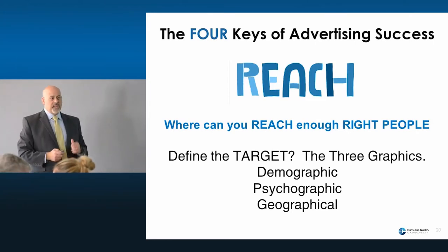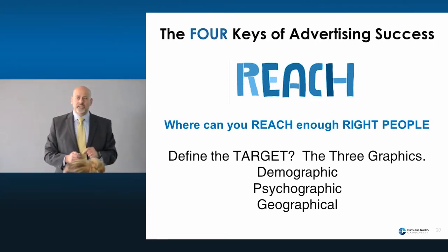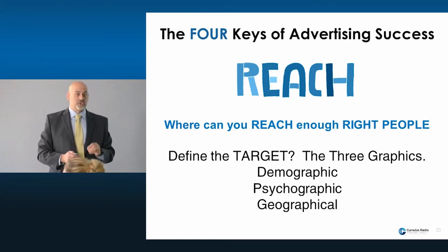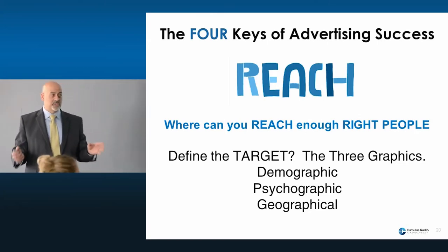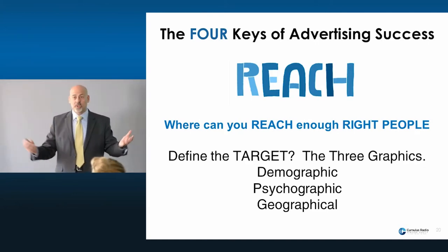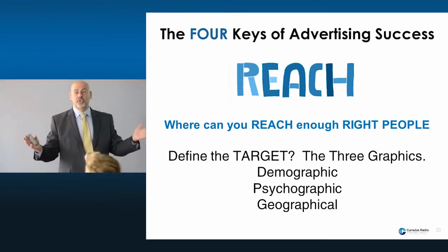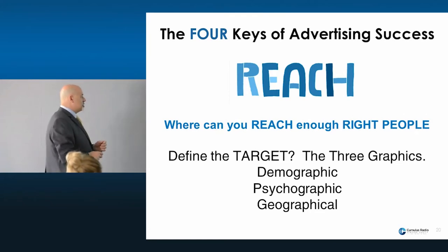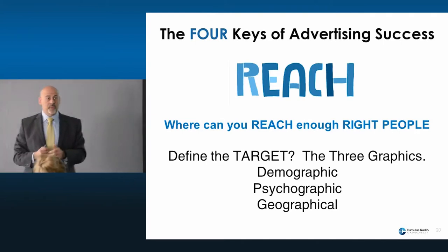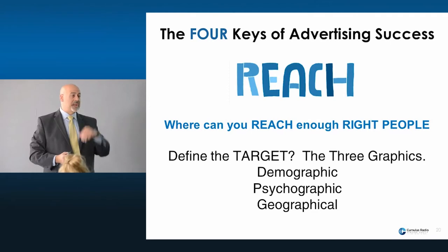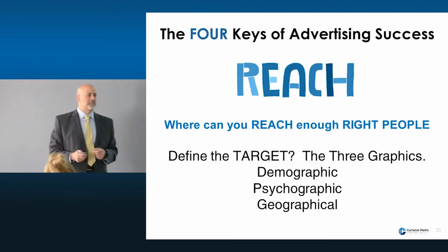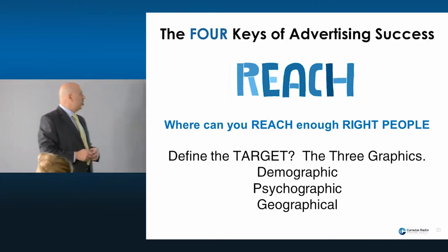We encourage you to look at it three ways, which we refer to as the three graphics. The first is demographic — the gender and age of who your core customer is. The second is psychographic — certain lifestyle traits or characteristics. If you're in the home improvement business, you need to reach homeowners. And then finally, geography speaks for itself. Most businesses do about 80% of their business within a certain radius — if you're a single standalone location, probably within about a 10-mile radius.